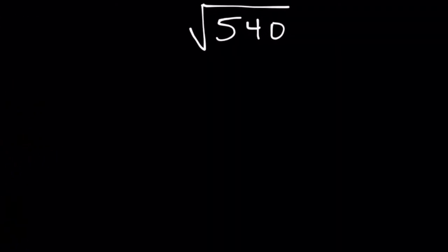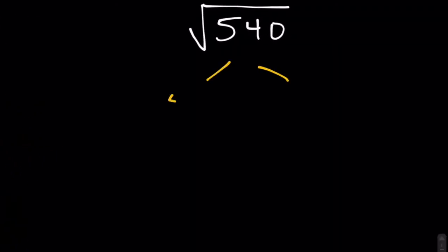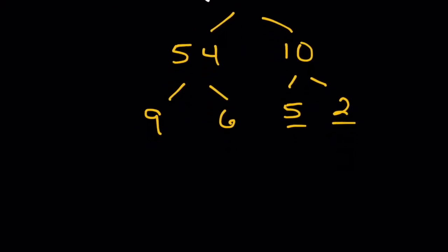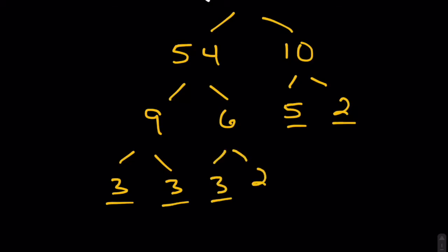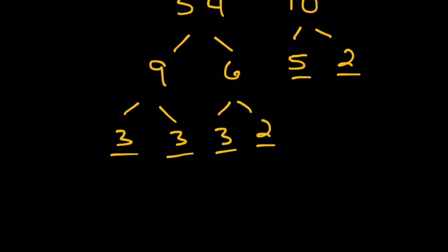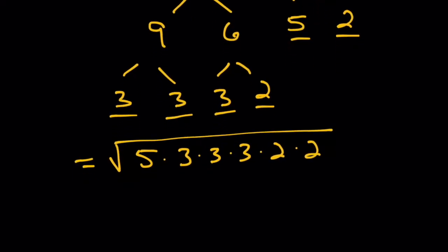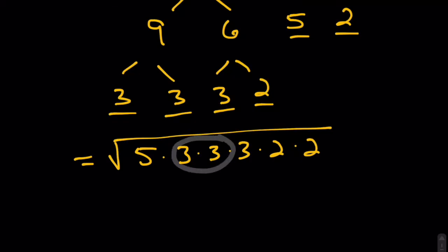Our final example for today will be the square root of 540. 540 breaks down into 54 times 10 — that's probably the easiest pair. 54 is the same as 9 times 6. 10 gives us 5 times 2. 9 breaks down into 3 times 3 — a prime pair. 6 breaks down into 3 times 2. We're going to have the square root of 5 times 3 times 3 times 3 and then 2 times 2. We have ourselves a pair of 3s — we're going to put one outside.